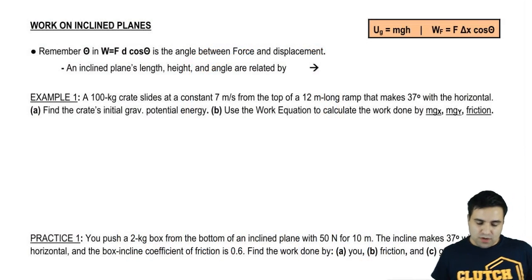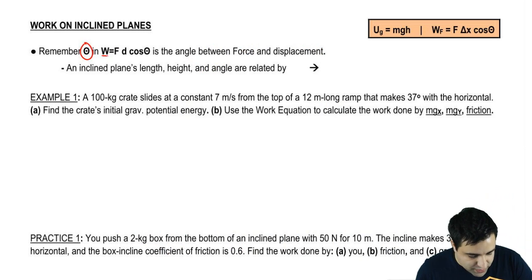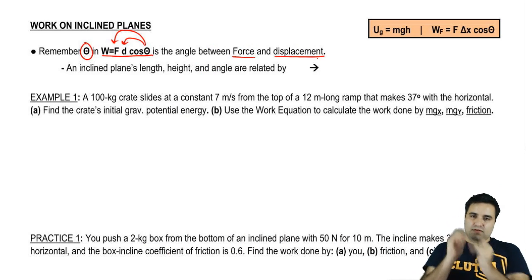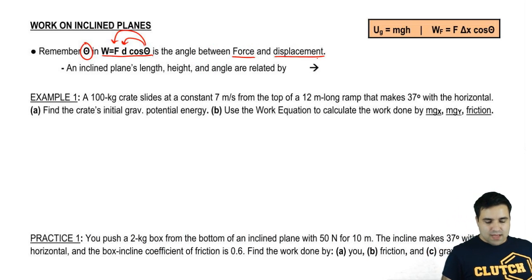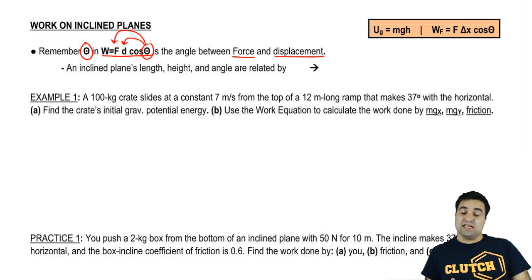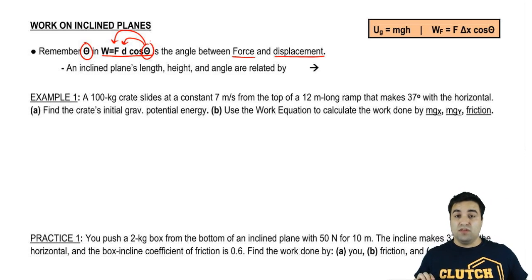So first, remember theta in the work equation is the angle between the force and the displacement. Force and displacement form two vectors, two arrows. There's a very specific definition as to what theta is, and a lot of questions will give you the wrong angle to try to trick you into using the wrong angle. So I think it's helpful to have a healthy amount of paranoia every time you see a theta to make sure that it's the right one.